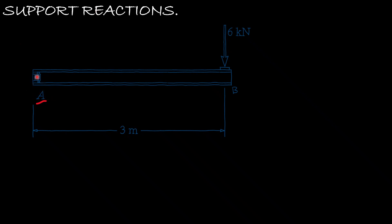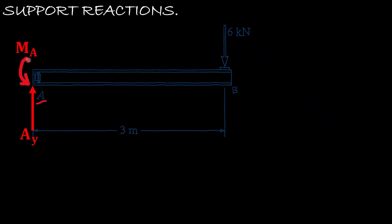At A, the fixed support restrains the beam from moving in the vertical direction, so it creates a reactive force in the y-direction: A_y. We make an assumption regarding the direction of the reaction force vector. If A_y comes out negative, our initial assumption was wrong. We also assume the moment at A is counterclockwise, which is positive.